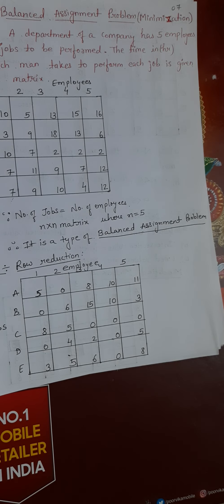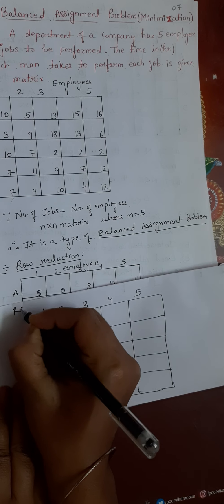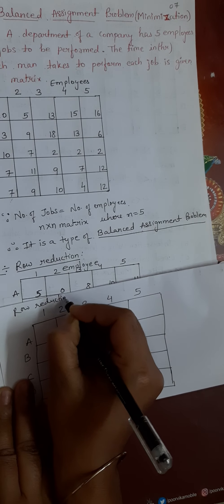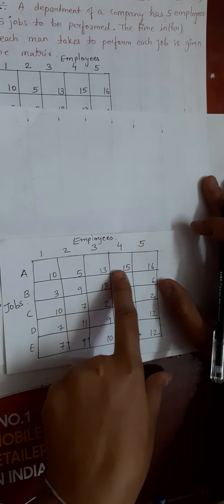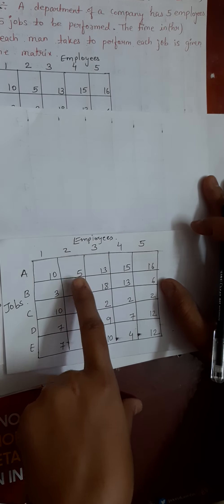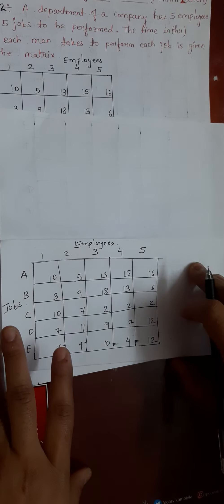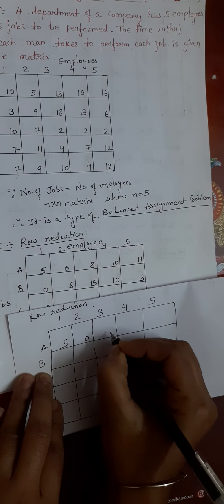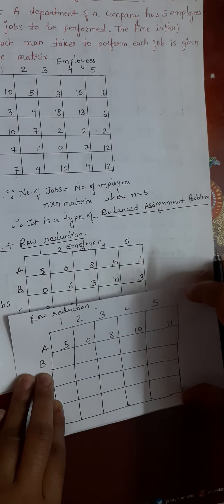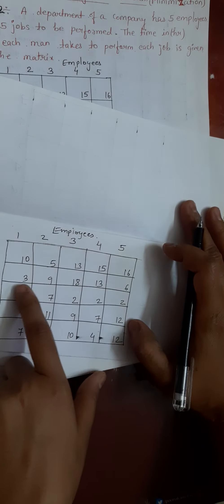Our first step is to do row reduction. We find the minimum element in each row and subtract it from all elements in that row. In the first row, the minimum element is 5. We subtract 5 from 10, 13, 15, 16 and we get 5, 0, 8, 10, 11.